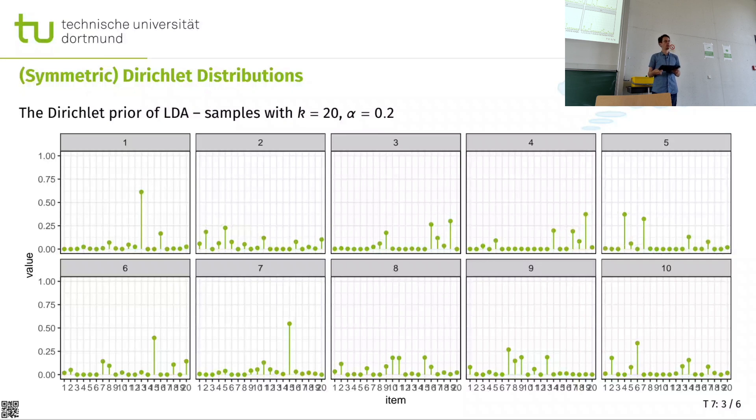These were symmetric ones. I can choose the alpha differently for every of the topics. So I could make a topic that is more frequent, more likely to occur. And I could make topics that are less likely to occur. And there are heuristics that say, for example, I'm choosing the alpha i as one divided by i. So the first one would be one, then 0.5, 0.3, 0.25, and so on. And that would mean I kind of artificially generate a bias that the first topics are more common, the later topics are less common.